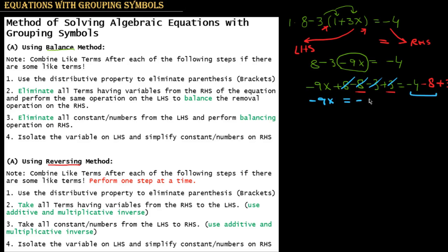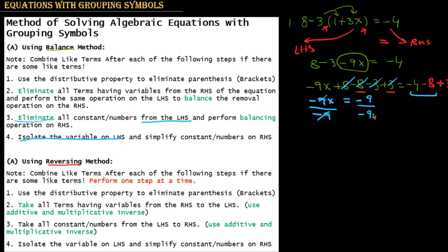This gives minus 9X equals minus 12 plus 3, which equals minus 9. We have eliminated all numbers from the left hand side. The final step is to isolate X by dividing both sides by minus 9. The minus 9 cancels out, and X equals 1.